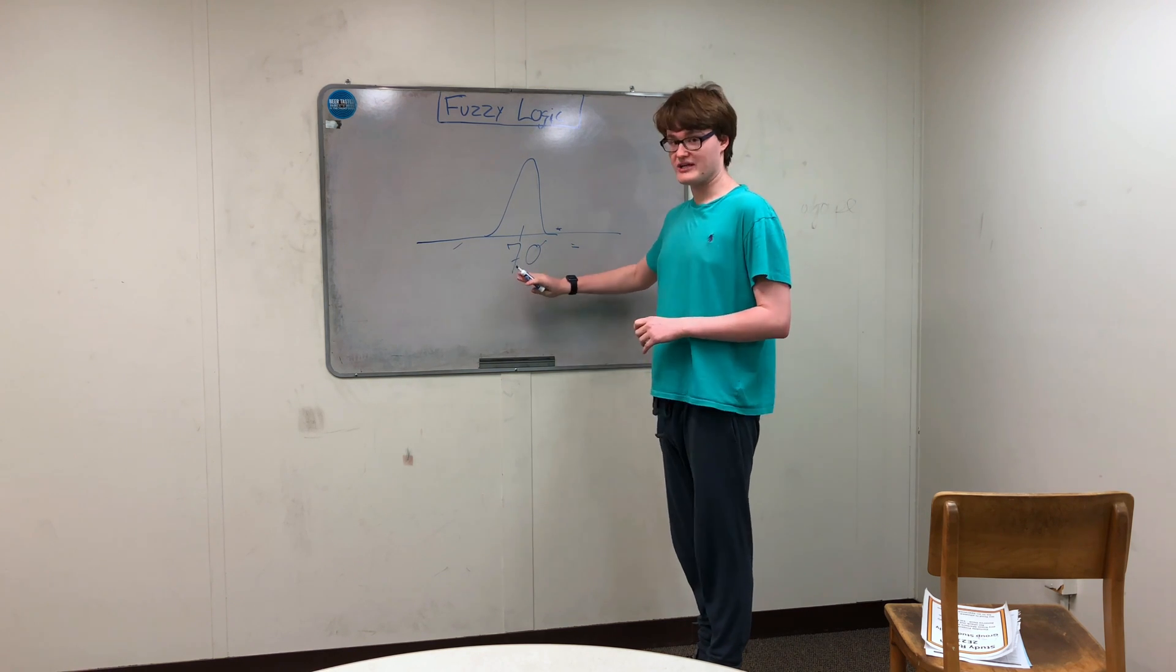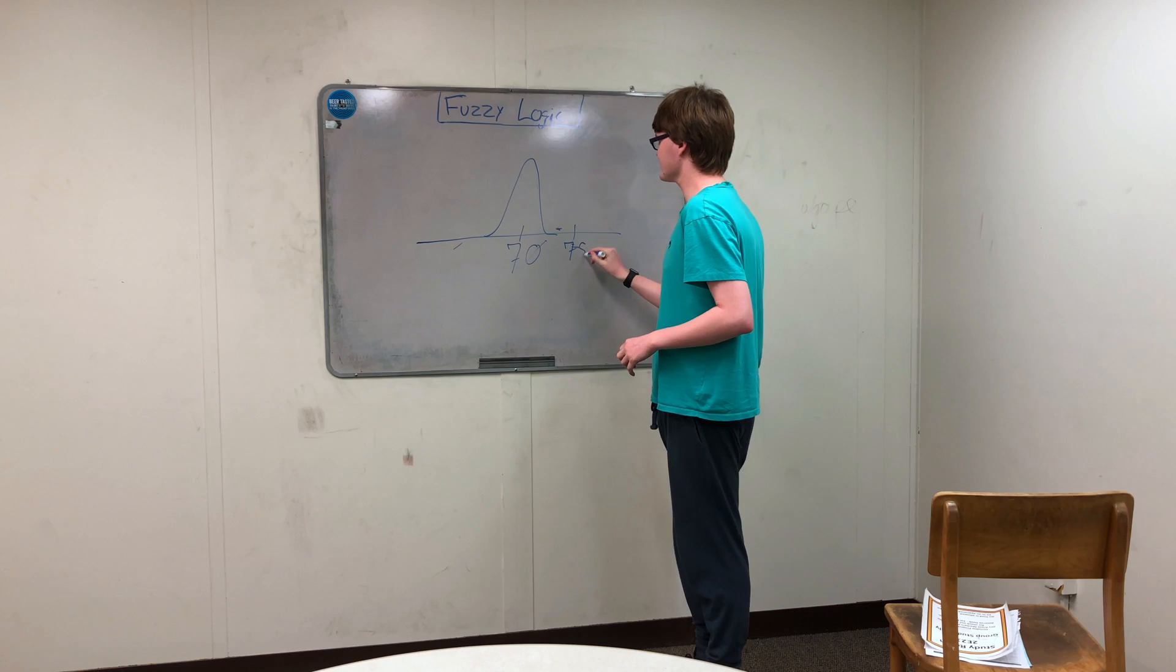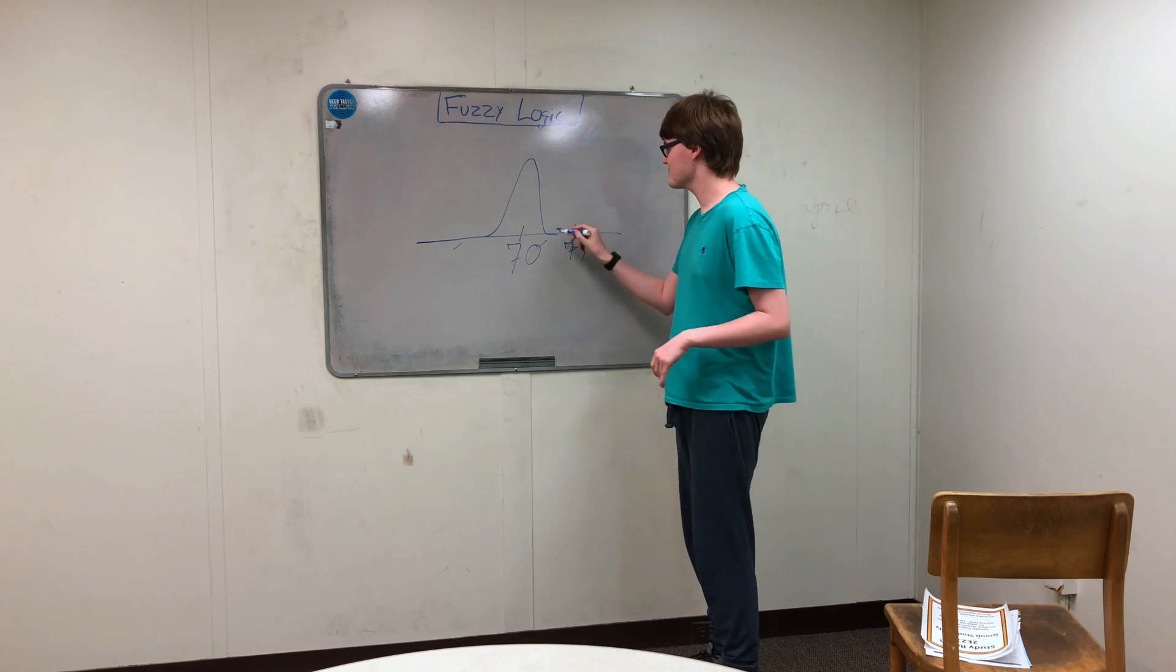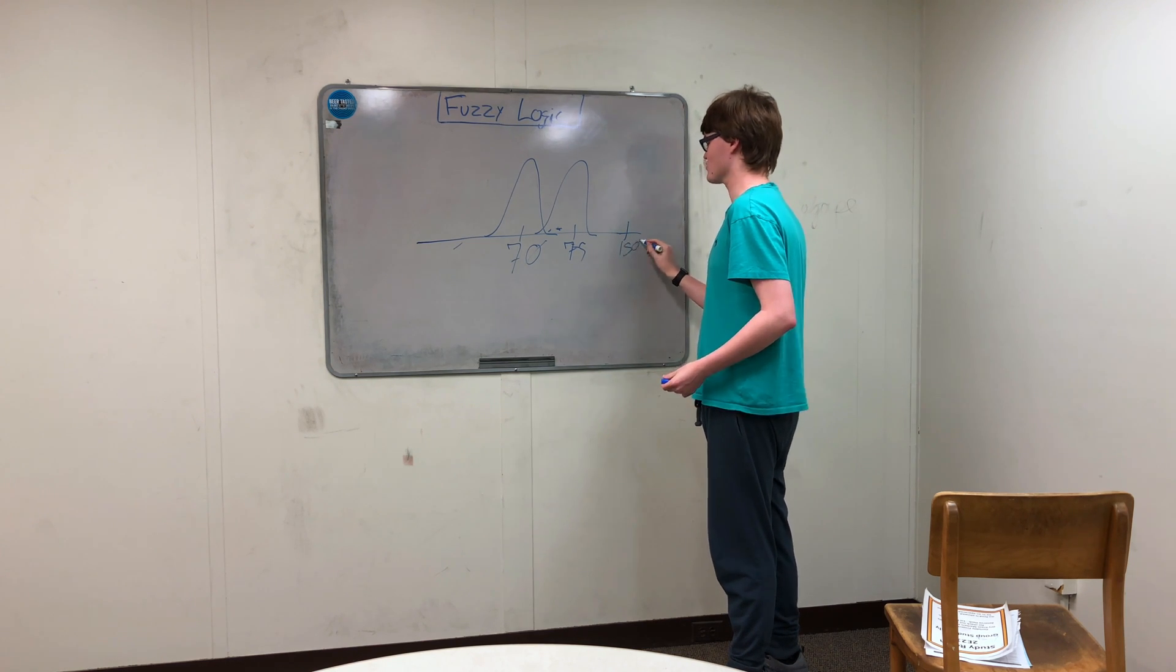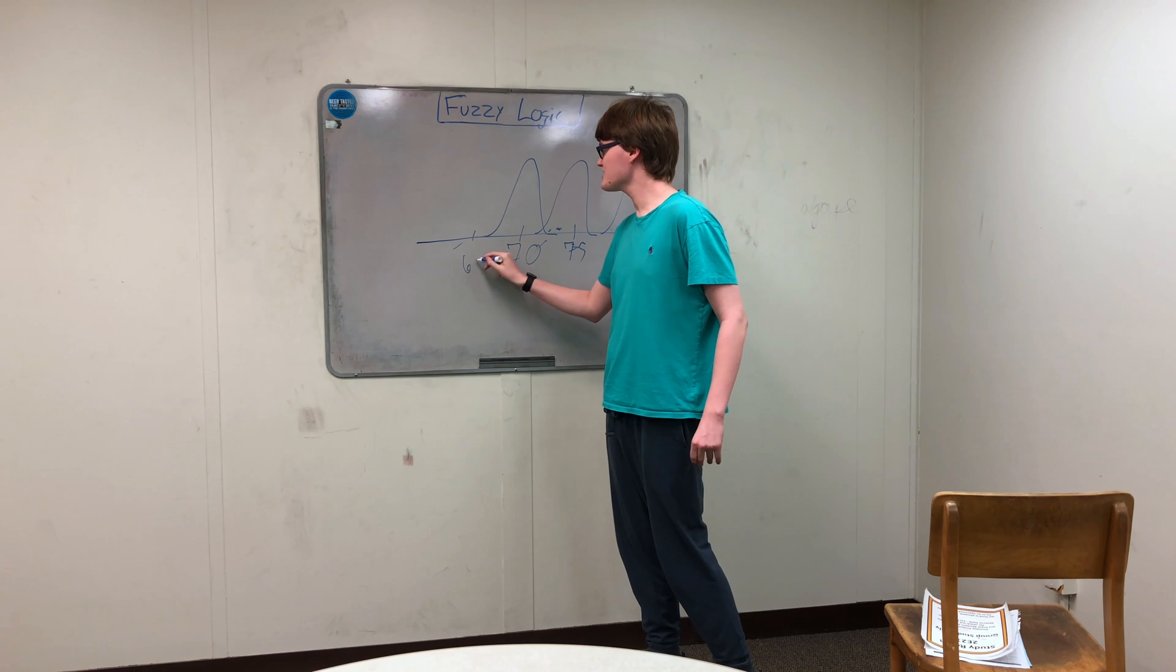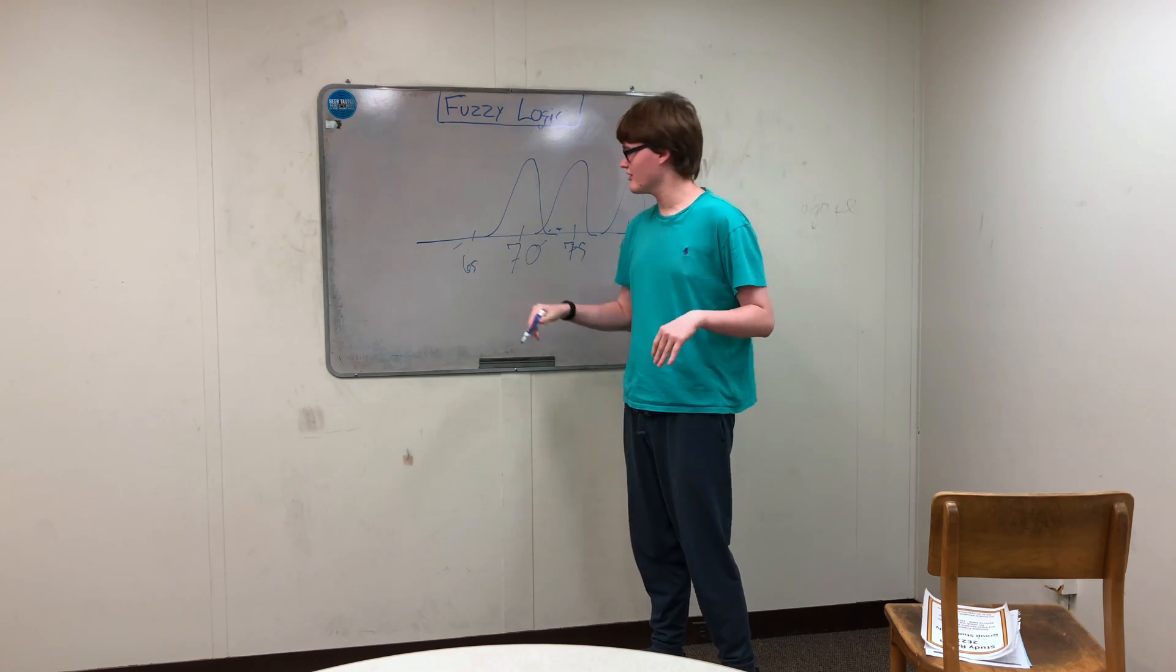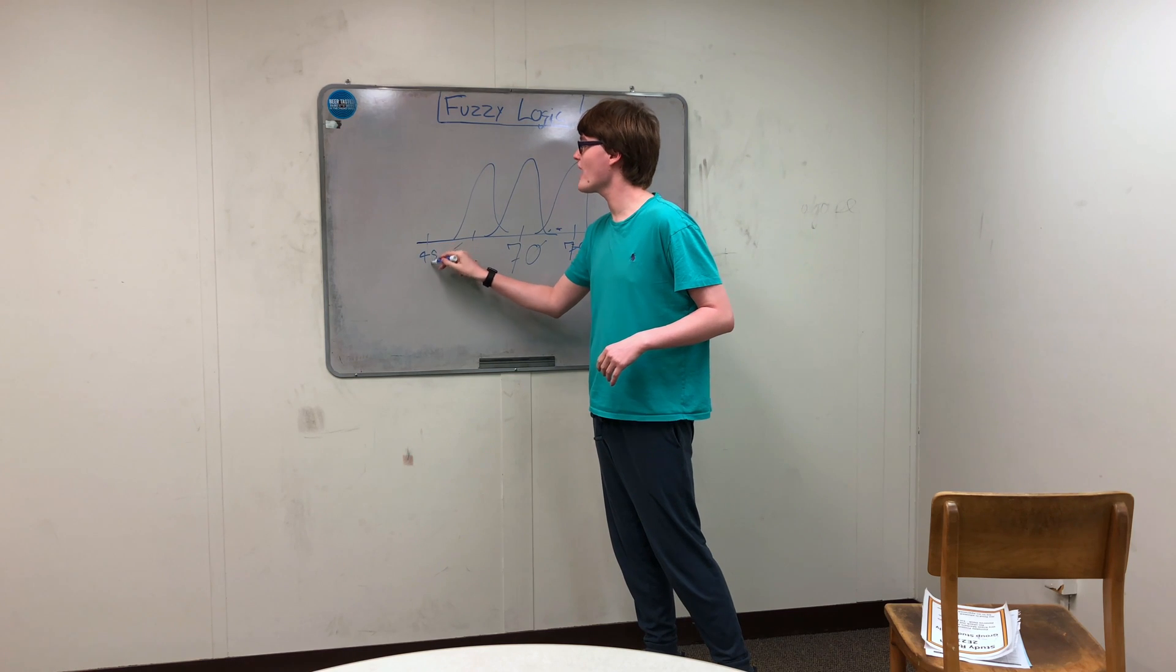So our 70 miles per hour is our target speed. And then we have some other ones. So maybe 75 is kind of too fast. So we have another membership function here. And then we have maybe 150 miles per hour, which is way too fast. And then we also have 65, which is kind of slow. And then we also have 45, which is way too slow.